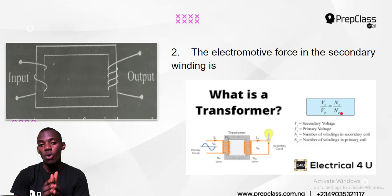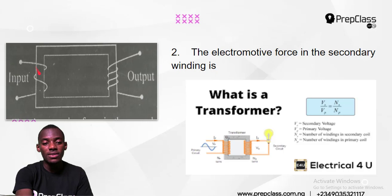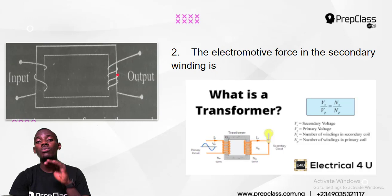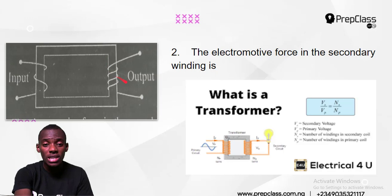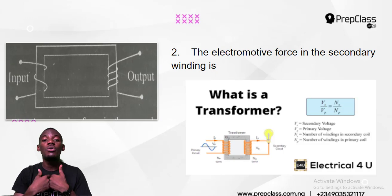Look at this winding here — in the primary section, it is smaller winding. But in the secondary section, it is larger winding. The number of windings has increased. So what will happen to the voltage? From the formula, if windings increase, voltage will also increase because the two of them are friends — they are directly proportional to each other.